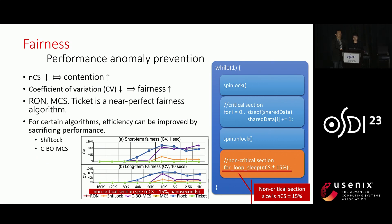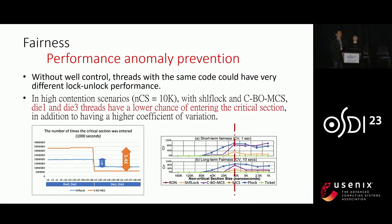When contention increases, RUN, MCS, and ticket algorithms maintain fairness in terms of the coefficient of variation for the number of successful lock acquisitions. However, uncontrolled lock-on-lock algorithms can lead to performance discrepancies among threads in high contention scenarios. ShuffleLock and CBO-MCS show that different threads have different chances of entering the critical section depending on which die the thread is located on. We refer to this phenomenon as performance anomaly. RUN does not suffer from performance anomaly.